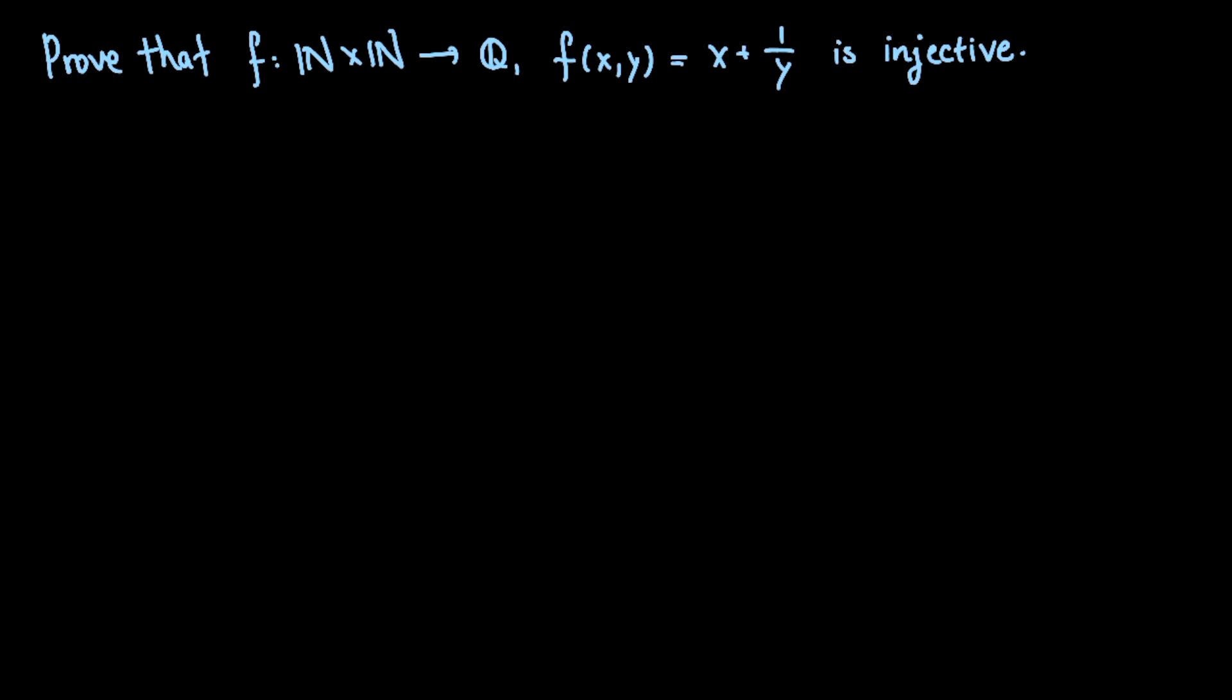So in class we were talking about injective, surjective, and bijective functions, and I gave you this problem. Find an example of an injective function from n cross n to q. That means that this function would have to take in a pair of positive integers as input and produce a single rational number as output.